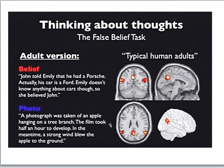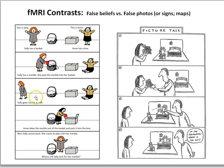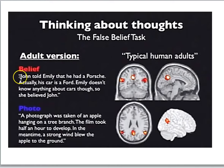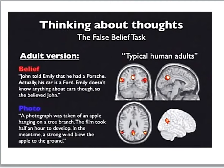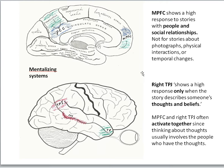Here are the results of this type of experiment. In the belief condition — the target condition — subjects read a story involving someone's false belief. In the photo condition, they read a story about a picture no longer representing the world. When you subtract the photo brain activity from the belief brain activity, you get high activation in the right temporoparietal junction. There is a set of brain areas activated by these tasks: bilateral TPJ activation (we'll focus on the right), the temporal pole, medial prefrontal cortex, posterior cingulate cortex, and the precuneus.